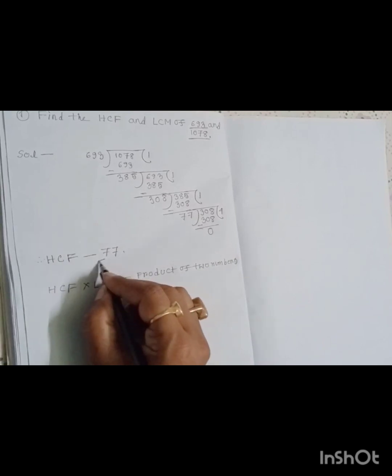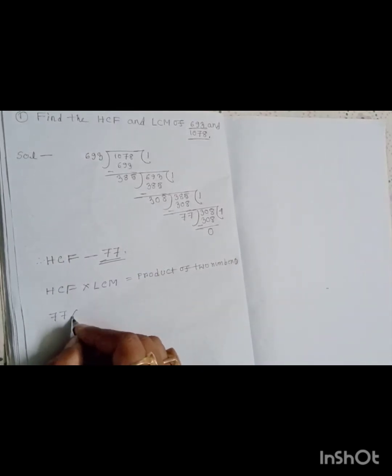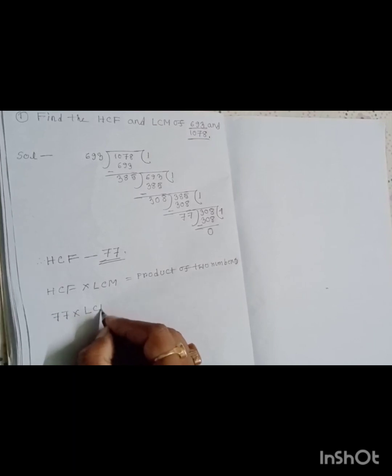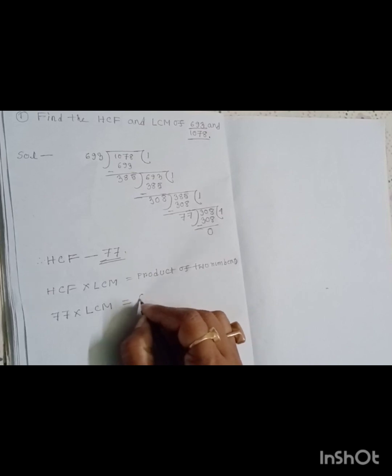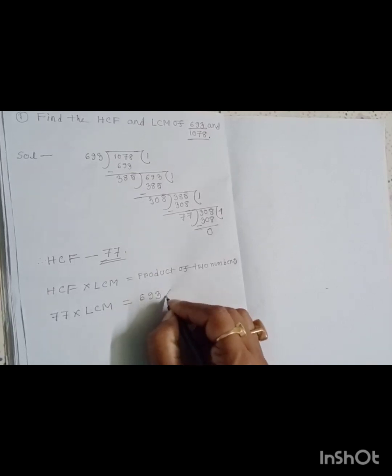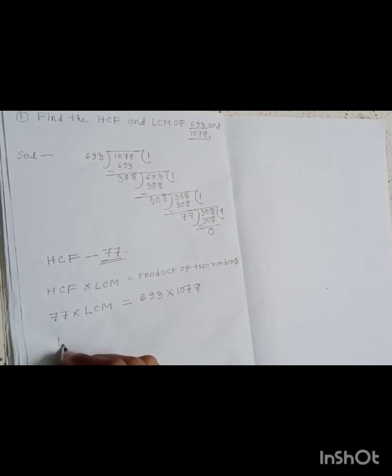We put the value of HCF, which is 77, into the formula. Since the product of the two numbers is 693 × 1078, the LCM will be equal to this product divided by the HCF.